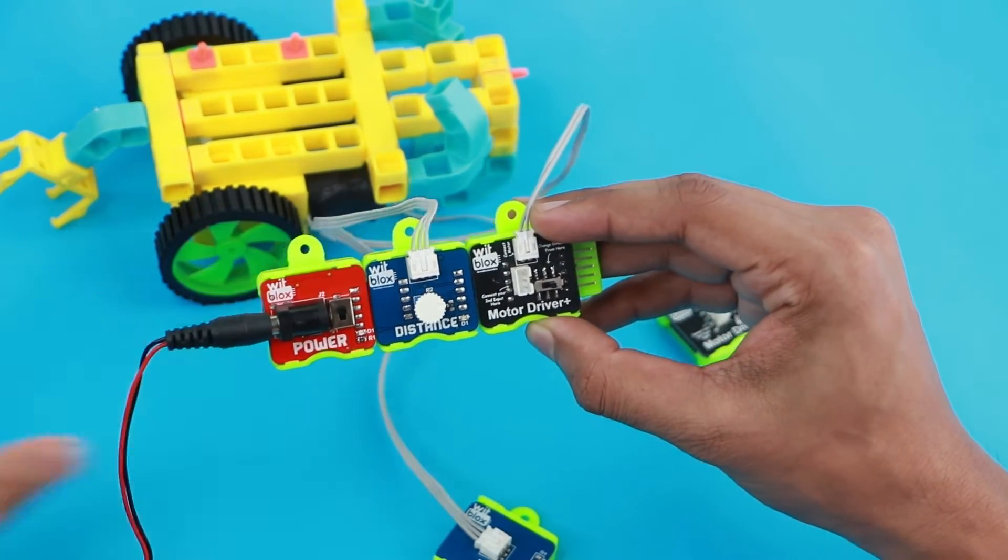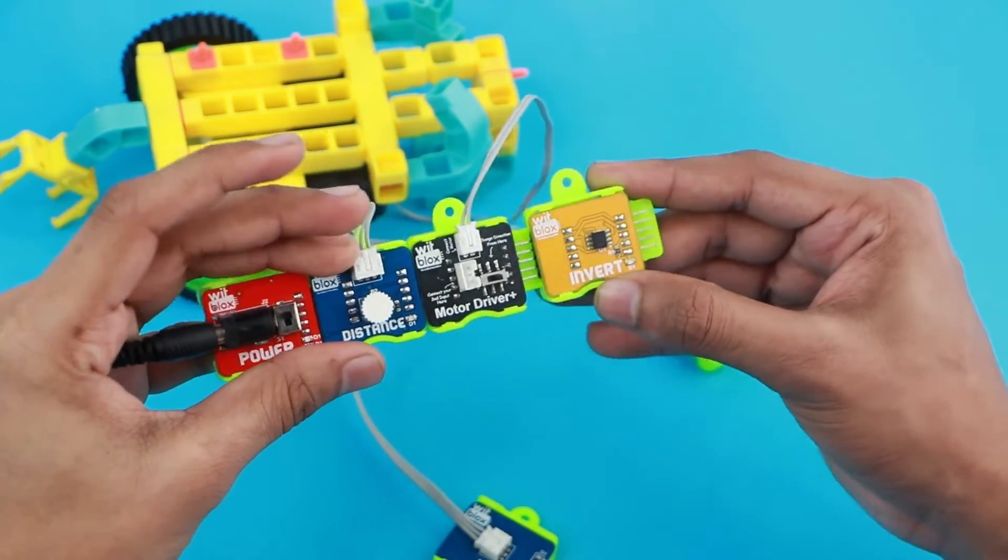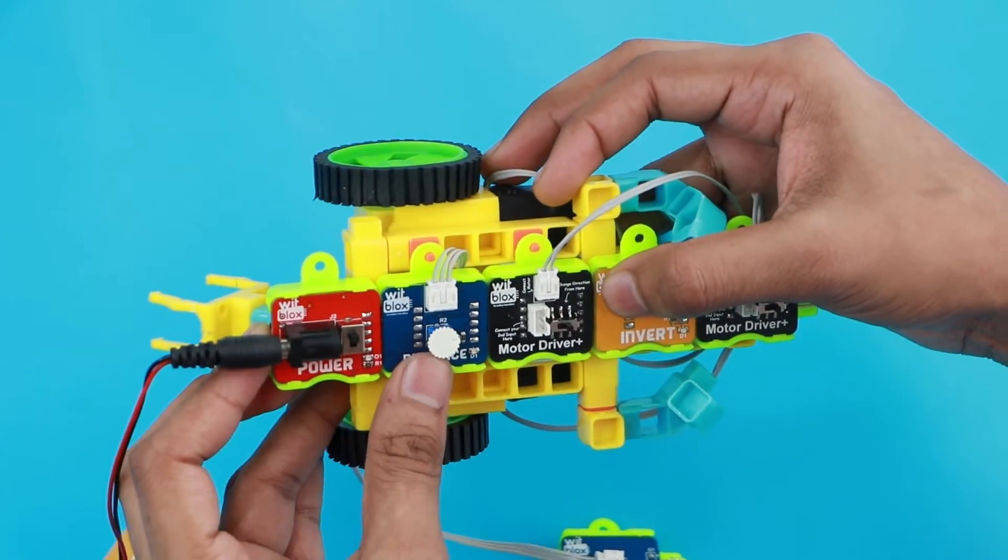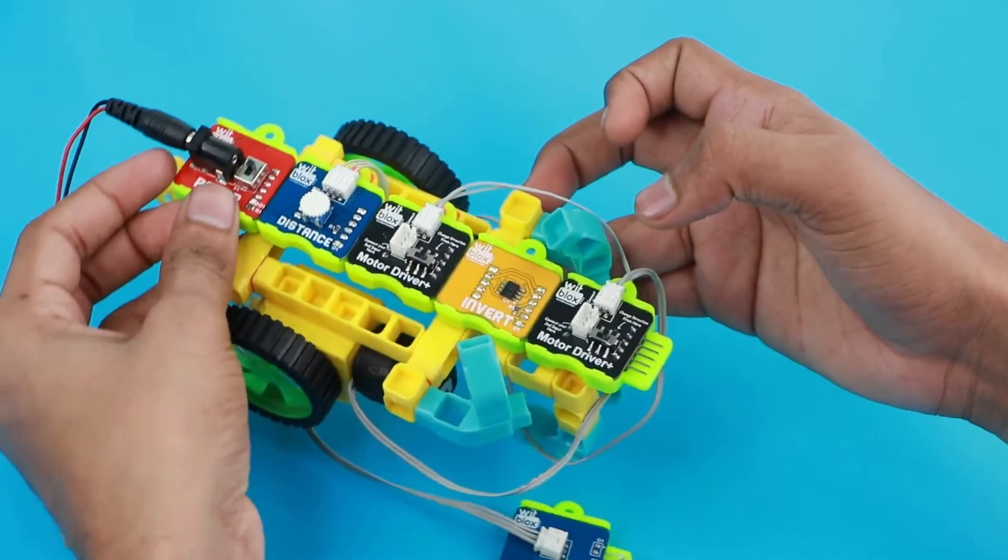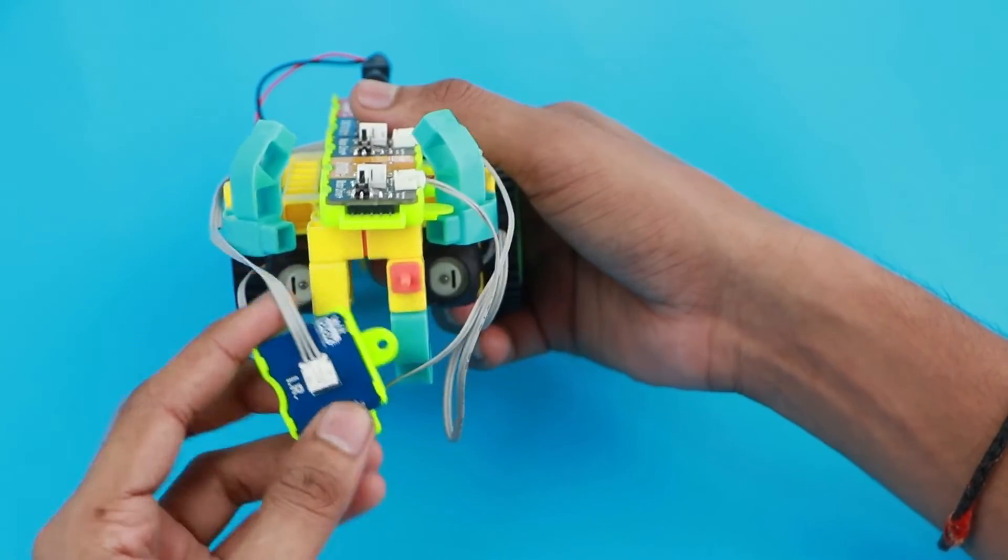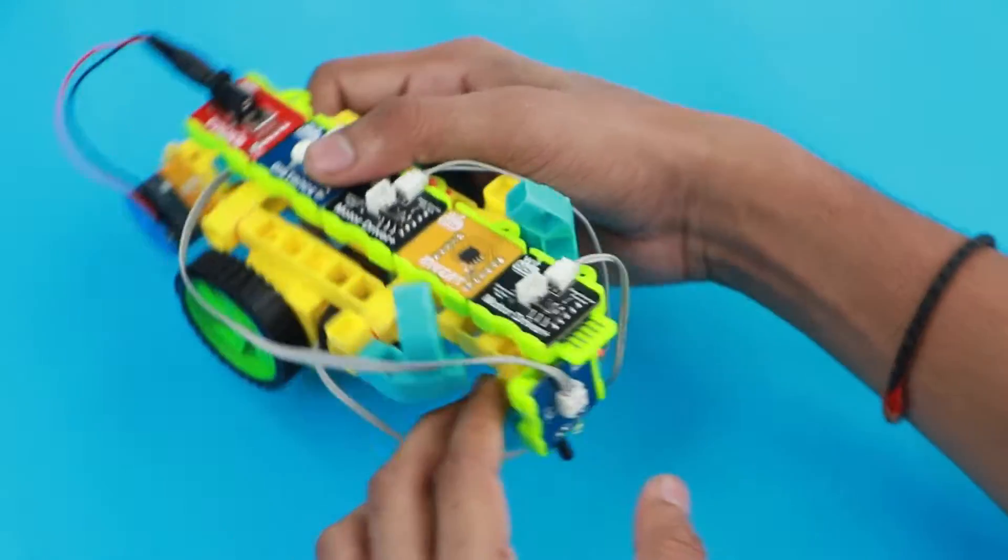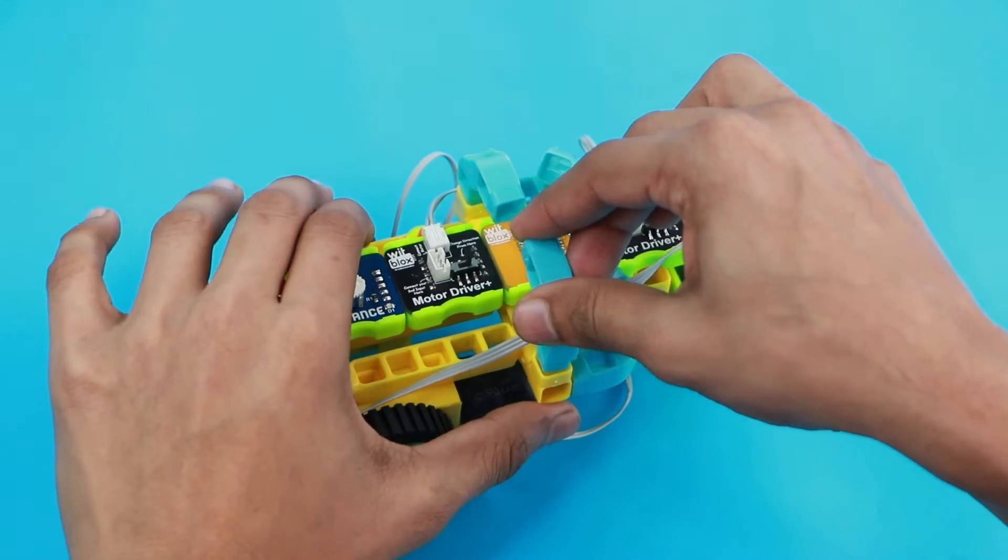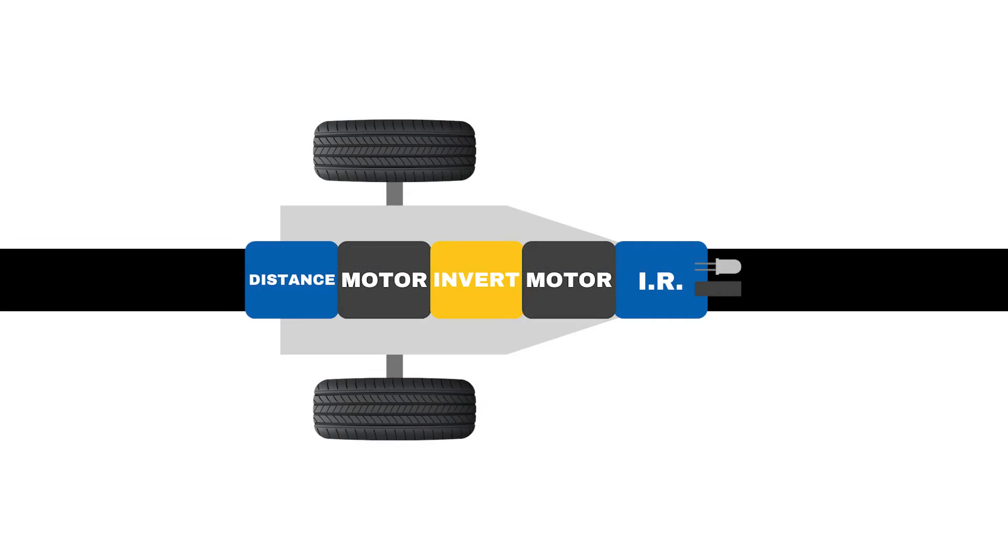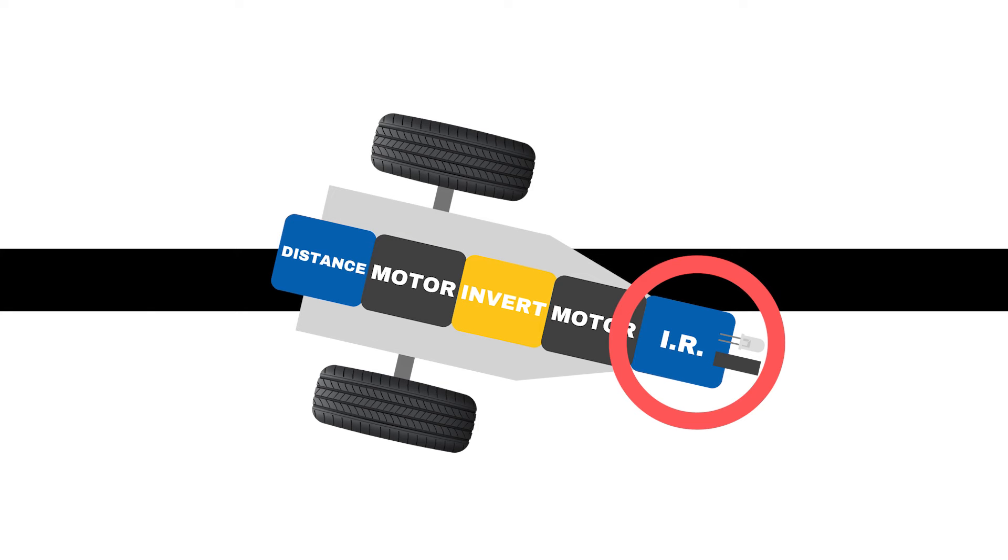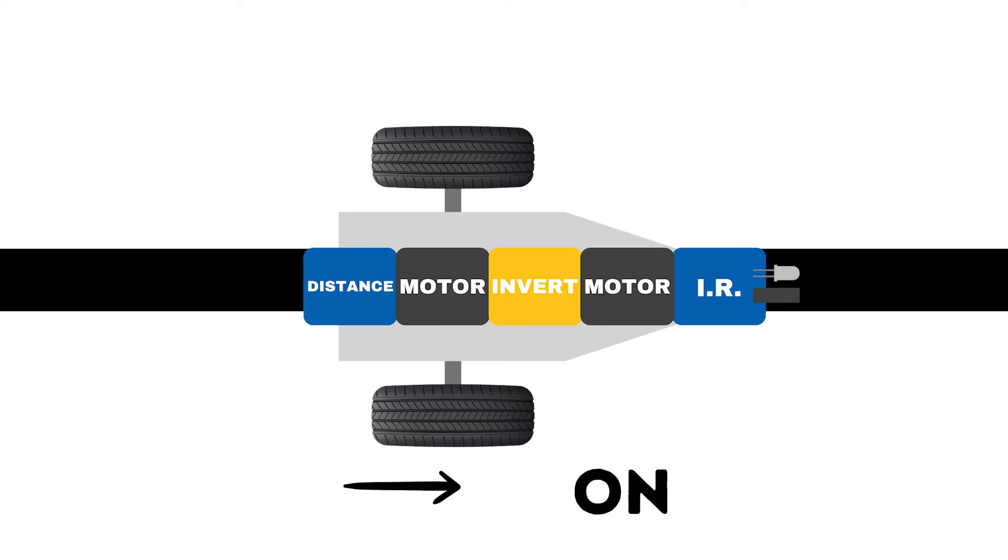Now let's create a logic: Power plus Distance plus Motor plus Invert plus Motor. We will need an IR sensor. We need a distance sensor to sense the black line and one motor should be on when robot is on black line and the other motor should be off. When the sensor is on the white part, the other motor will be on and the previous motor will be off.